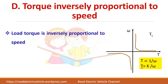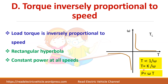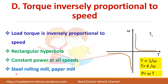The fourth type is torque inversely proportional to speed, giving a rectangular hyperbola. Since power equals ω × T, the power is constant in these loads — so it is called a constant power load. This is found in steel rolling mills and paper mills.